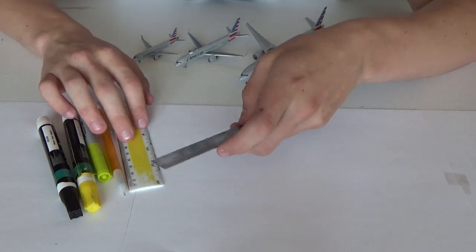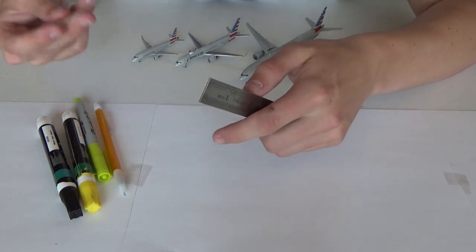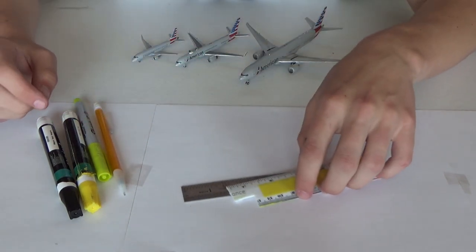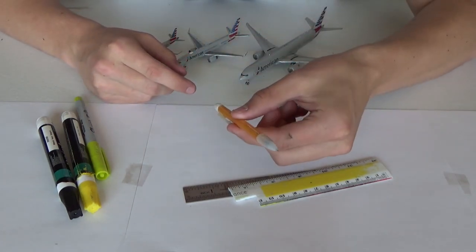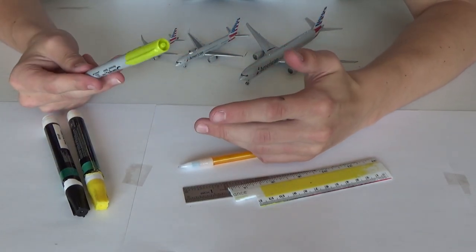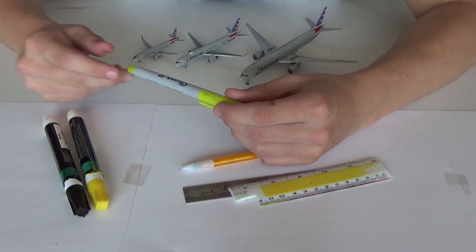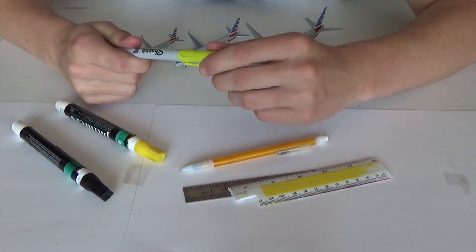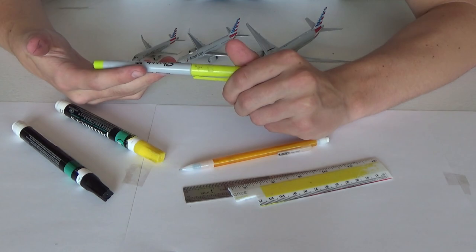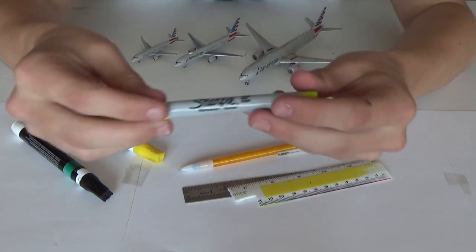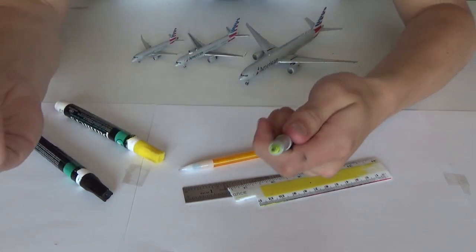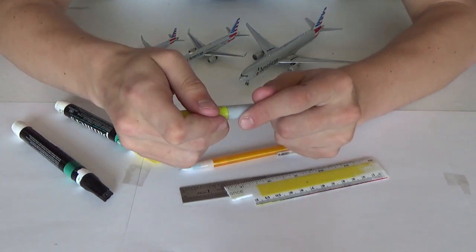You're going to need a ruler. I have two of them here just for a reference point. You're going to need a pencil for sure. Depending on how your final product, like if you're not using paint pens, you're for sure going to need a, this is a ultra thin Sharpie yellow, but you can use color pencils, markers, whatever.